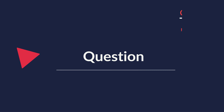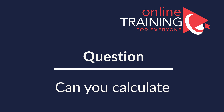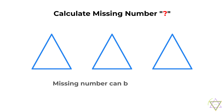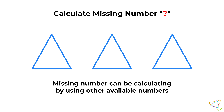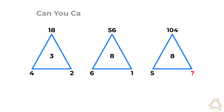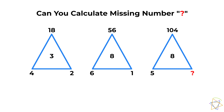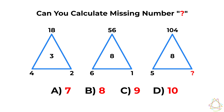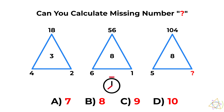Here's a question you frequently see on the test. You're presented with three triangles, each with numbers at the corners and a number in the middle. The first triangle has 18 on top, 4 and 2 at the bottom, and 3 in the middle. The second has 56, with 6 and 1 at the bottom and 8 in the middle. The third has 104 on top, 8 in the middle, 5 at the bottom left, and a missing number at the bottom right. Choices: A) 7, B) 8, C) 9, D) 10.